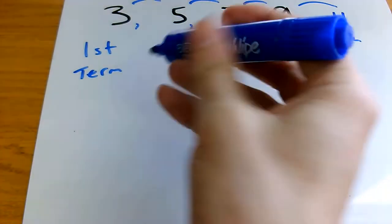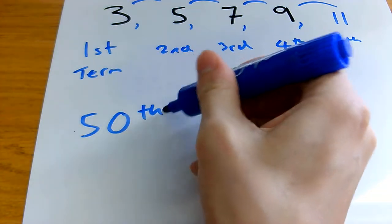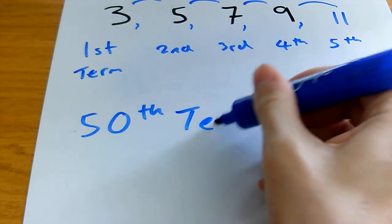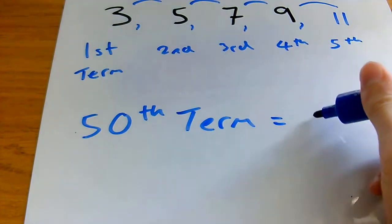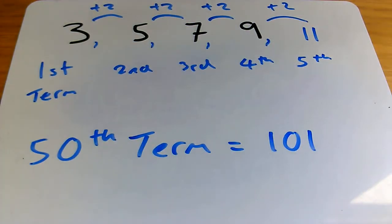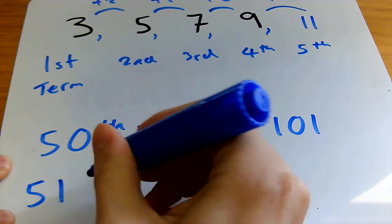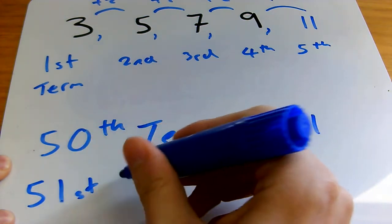But what if I told you that the 50th term of this sequence is 101? Now, you could work it out by counting up, eventually you'd get there, but I'll just tell you that's 101. What would the 51st term be?